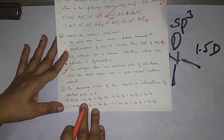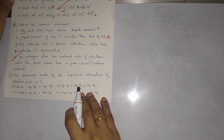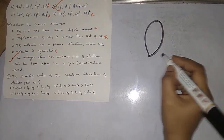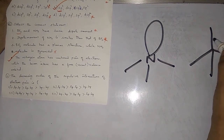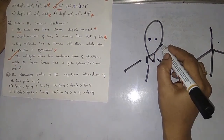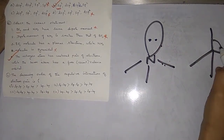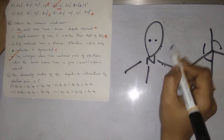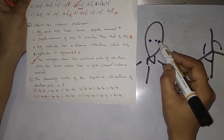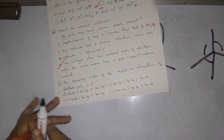The decreasing order of repulsive interaction of electron pairs: lone pair–lone pair repulsion is the highest, then lone pair–bond pair, then bond pair–bond pair. This is why the bond angle in ammonia differs from methane — the lone pair causes repulsion, pushing bonds away and decreasing the bond angle.